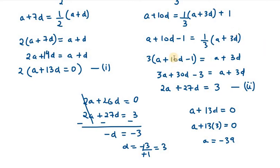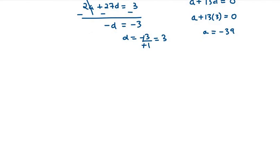A is given now, D is given. Now we need to find the value of the 15th term. A15 can be written as A plus 14D. A is minus 39 plus 14 into 3, so it will be minus 39 plus 42. 42 minus 39 will be 3, so A15 is 3 for this case.